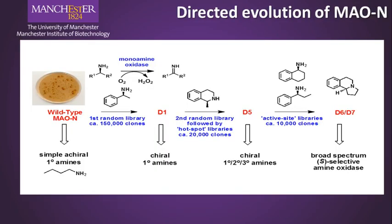This slide shows the laboratory evolution of an enzyme called MAO-N, monoamine oxidase N, where we have done exactly the process described. We take the wild type enzyme, generate libraries, and screen those libraries of enzymes against different substrates to try to develop new biocatalysts with new activities towards the substrates shown on this slide.